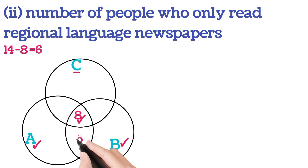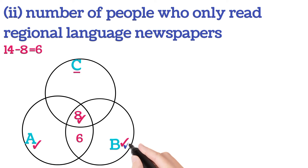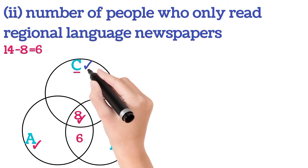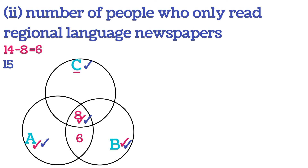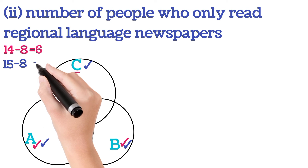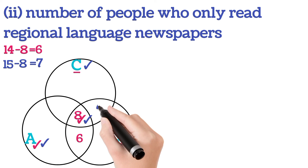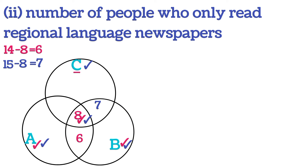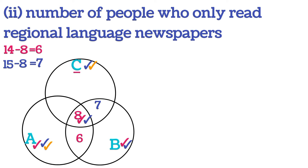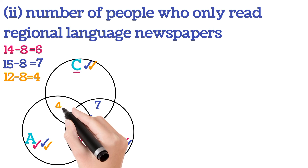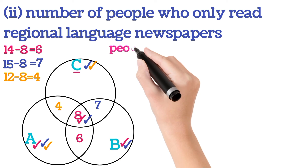People who read Hindi and regional language is given as 15, out of which 8 also read English newspaper. So the number of people who read Hindi and regional language only is 15 − 8 = 7. Similarly, the number of people who read English and regional language newspaper is given as 12, so 12 − 8 = 4 people read English and regional newspaper only.